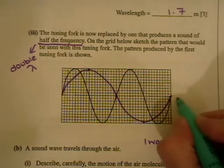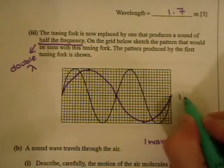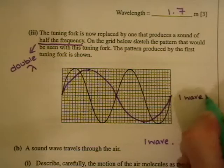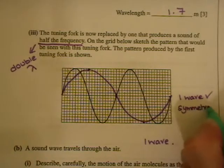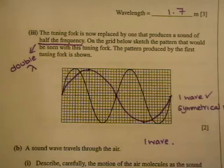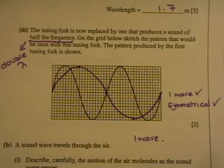So you'll get one mark for having one wave, they'll give you one mark. And if it's symmetrical looking, they'll give you a second mark. So if it's nice and even looking, they'll give you a second mark.